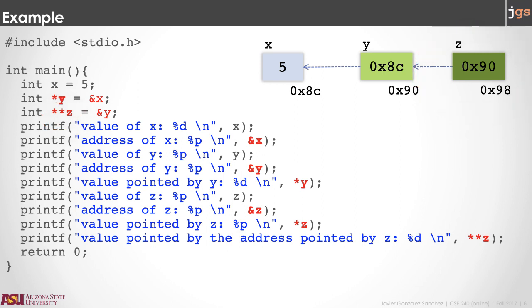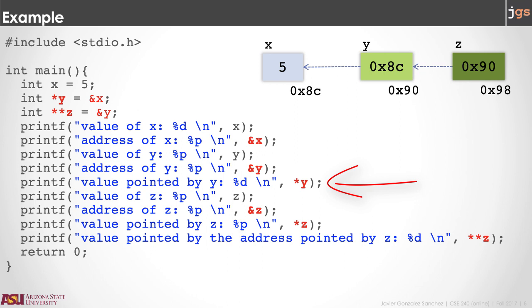Then you can print the value 5 using the name of the variable that has that value — in this case x. You can access the value of x using the pointer y, so asterisk y is going to be 5. But also you can access the value in x using asterisk asterisk c. You can think about the asterisk like one asterisk for each arrow in the picture. So it's like: read the address in c, 0x90, and go to that address; read the value there, 0x8c, and go to that address — and that is what you are going to print, in this case 5.